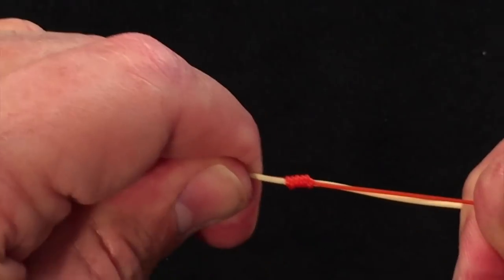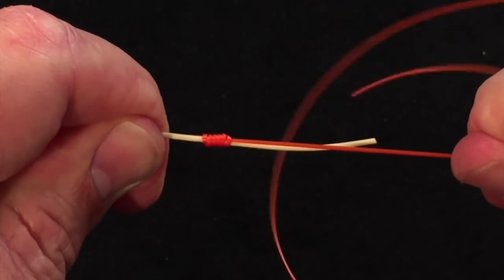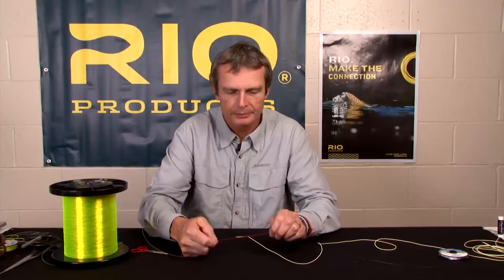Pull the fly line and the tag in. Pull the nail knot end. And that is a quick, simple way of tying a nail knot without a tool.